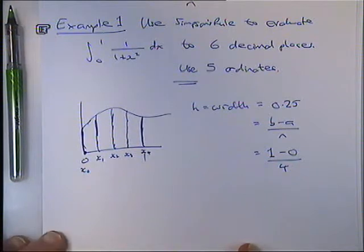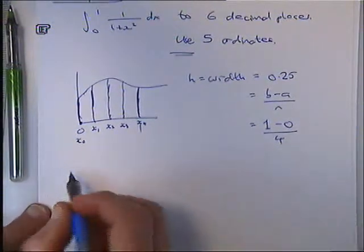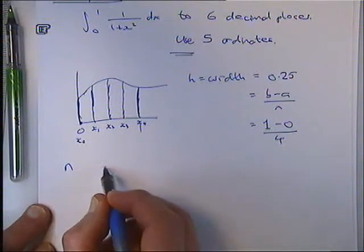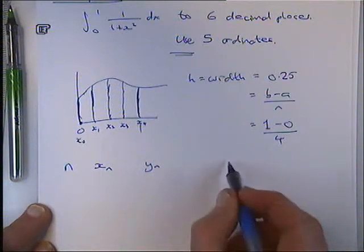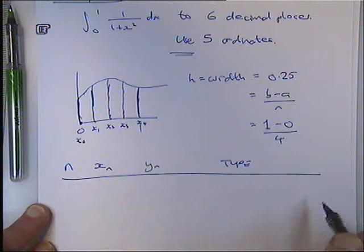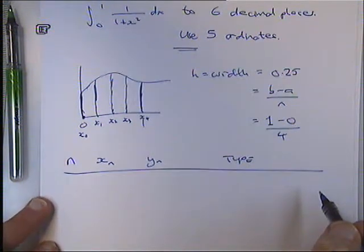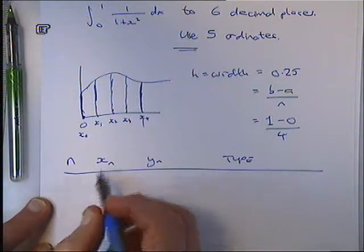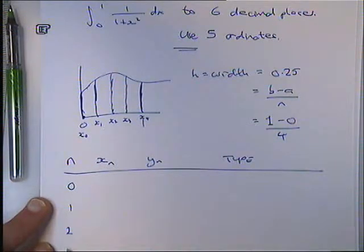OK. The way I suggest you organize your work is like this, with a table. We'll have our Ns, our X values, our Y values, and then we'll have what type of thing they are. I'll explain what that means in a minute. So we're going to have, basically, 0, 1, 2, 3, and 4 as our rows.